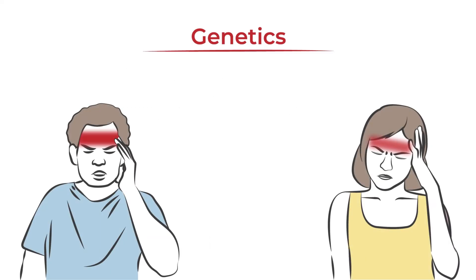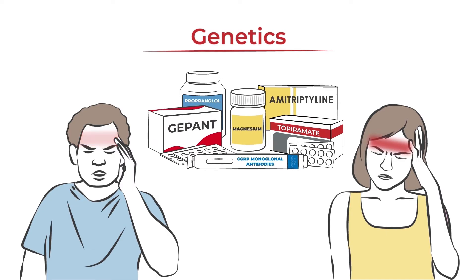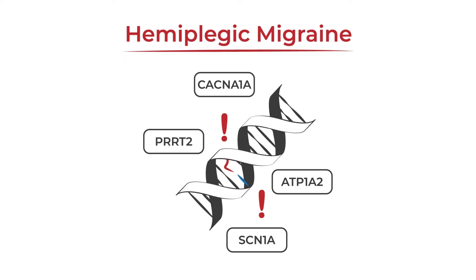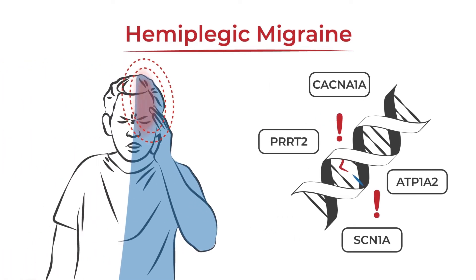This may explain why it is so difficult to treat and why one treatment does not work for everyone. Genetic mutations have been found to cause familial hemiplegic migraine, a subtype of migraine with aura.